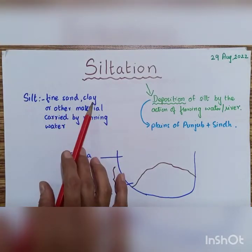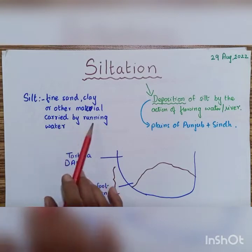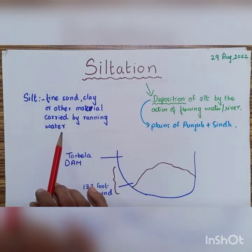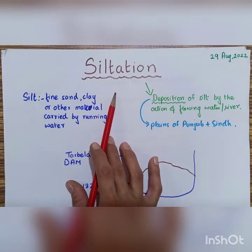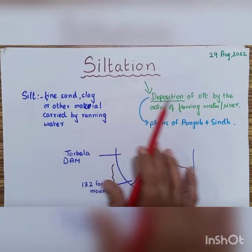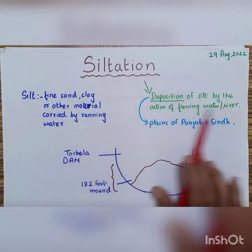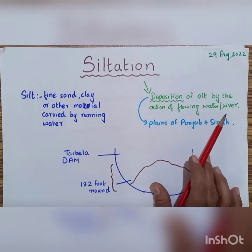Silt is fine sand, clay or any other material which is carried by running water. Siltation is a very common activity which takes place wherever there are rivers. It is basically the deposition of this silt by the action of flowing water or the river.